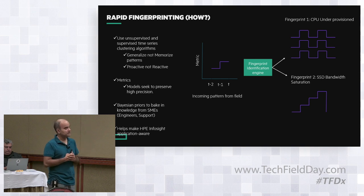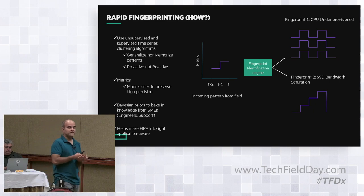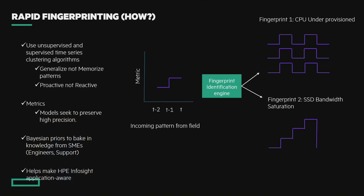When a fingerprint comes in, we have a fingerprint identification engine that looks at all the fingerprints we already have in a library. When you see a staircase-like pattern forming, you don't know at that point whether it's a staircase or a boxed pattern. But if you've seen three boxed patterns before and only one staircase, when a simple pattern starts to form, using prior knowledge and subject matter expert intelligence, we can tell it's most likely a CPU under-provisioned scenario rather than a bandwidth saturation issue. As we wait, the pattern manifests and we become progressively more sure of what it is.